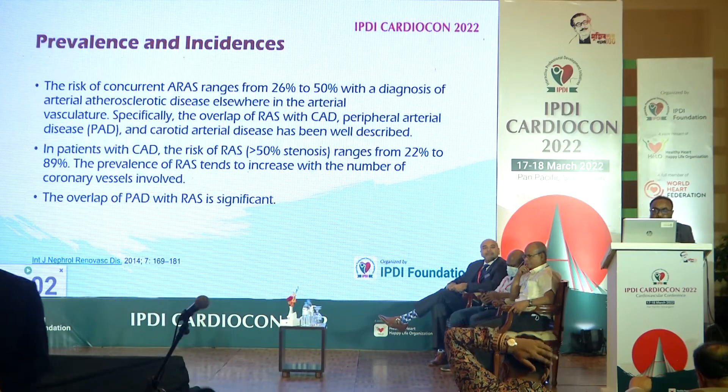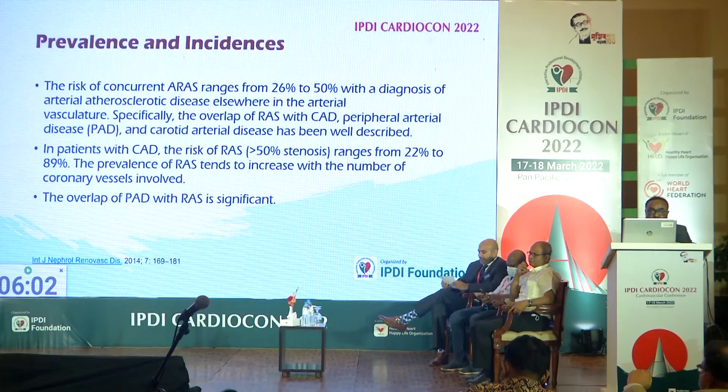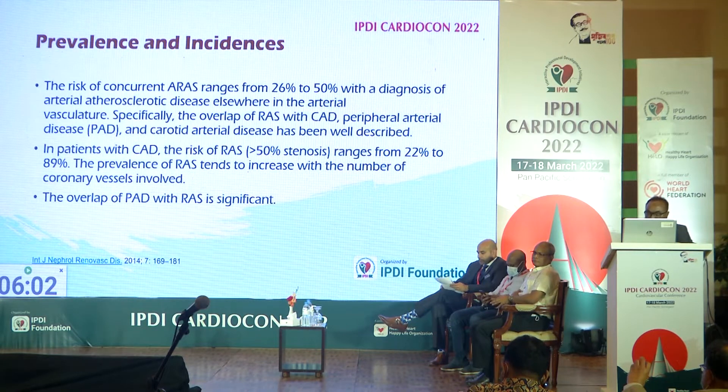The risk of concurrent atherosclerotic renal artery stenosis ranges from 26 to 50% with a diagnosis of arterial atherosclerotic disease elsewhere in the arterial vasculature — specifically, overlap of renal artery stenosis with coronary artery disease, peripheral arterial disease, and carotid artery disease. In patients with coronary artery disease, the risk of renal artery stenosis greater than 50% ranges from 22 to 89%. The prevalence tends to increase with the number of coronary vessels involved.